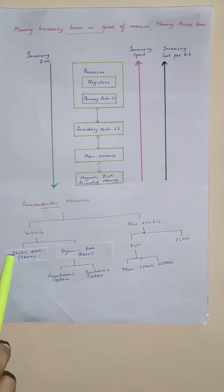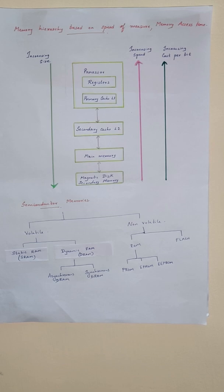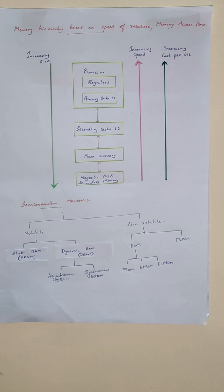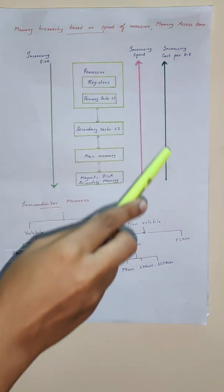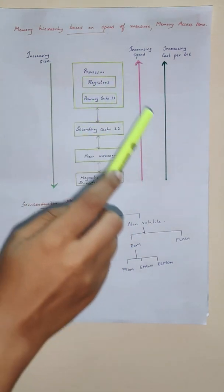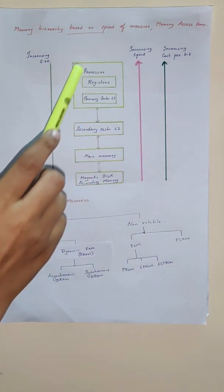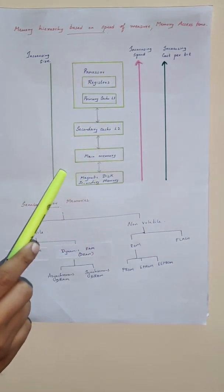We will go into detail about all these memories in the coming lectures. In the basic concepts we learned about the maximum size of a memory, which is dependent on the addressing scheme. We discussed how data is transferred between a memory and a processor, and we also discussed speed measures like memory access time and memory cycle time. Depending upon these speed measures, the memory hierarchy is designed, showing which unit has the highest speed and which unit has the largest size.